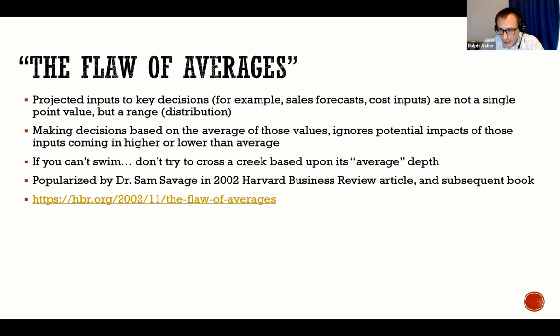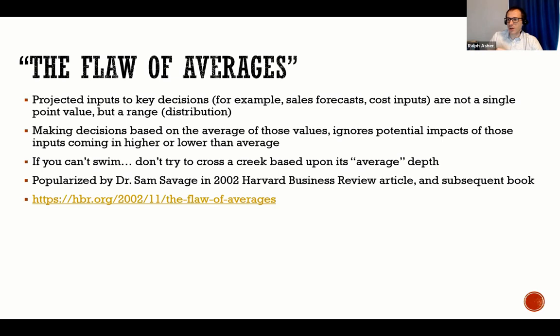For those of you working in the business world, you know that in nearly all business decisions, future projections — for example, sales forecasting or how much a material is going to cost six months from now — are presented as a single value. Like, we're going to sell a thousand widgets next month or the cost of paper will be $10. But really nobody knows that precisely. Those would be more accurately represented as a range, or a distribution.